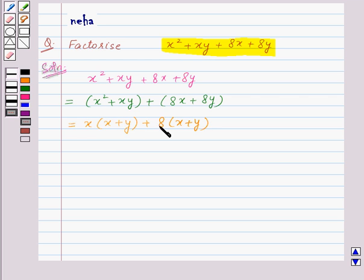Now, in this expression, we have a common factor x plus y. So it will be equal to x plus y into x plus 8. This is equal to x plus y into x plus 8.